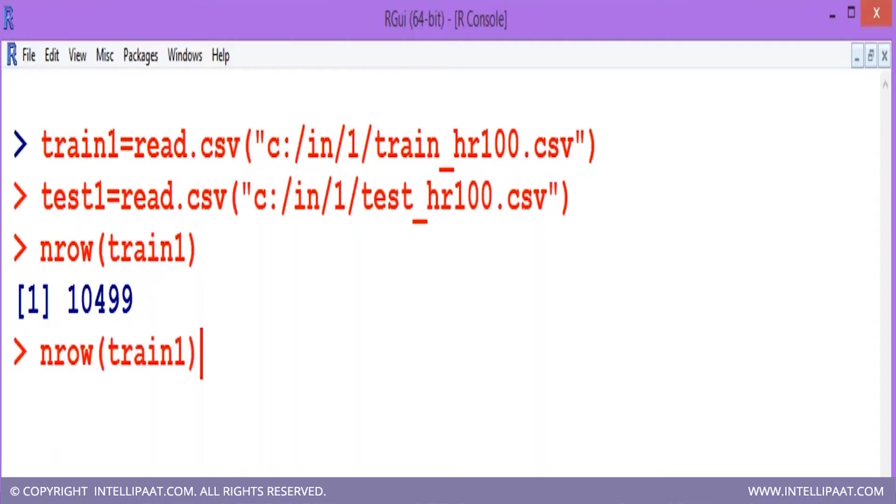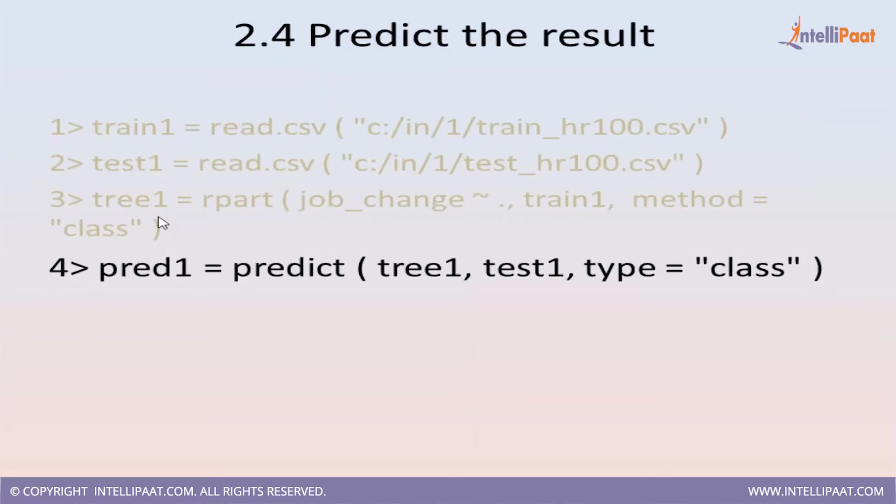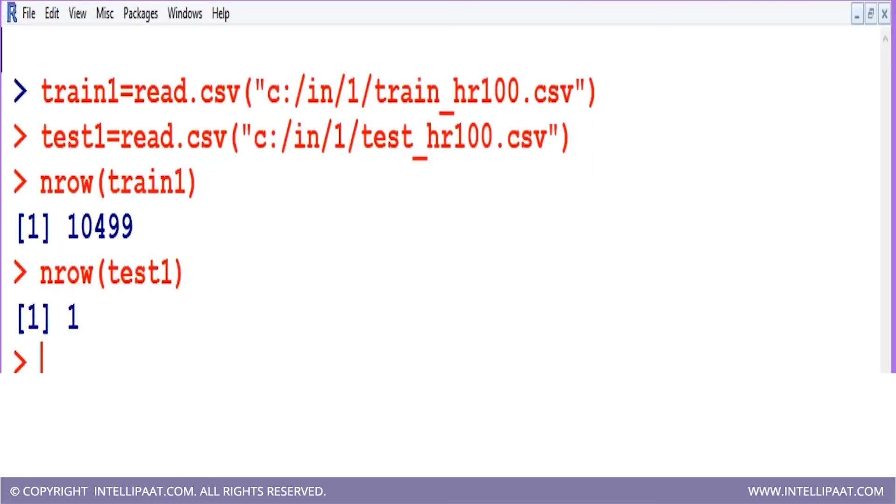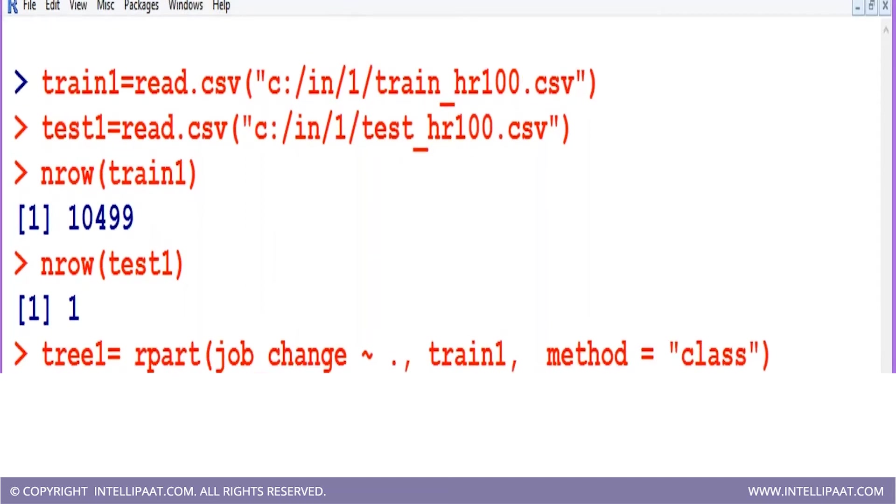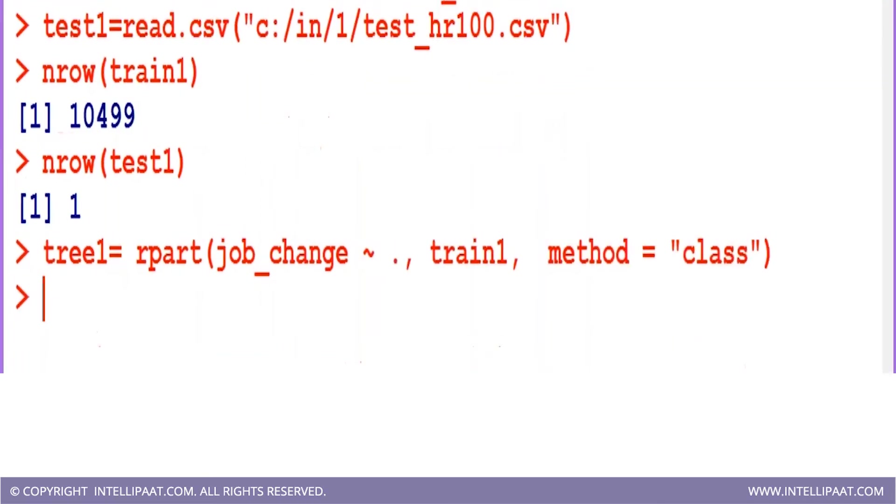Then the next step, I will check how many rows are in testing. We have just one row. Based on this number of rows, I am going to do the prediction. Next is to build this tree. I am going to perform this third step after checking the number of rows. This step is a very important step. Now my decision tree has been built.